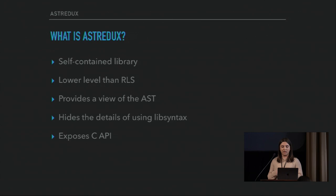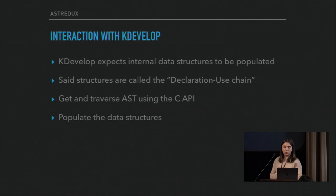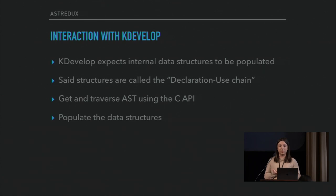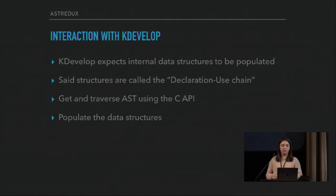At the moment it's using libsyntax as a platform to build on. In the future, I'm looking into getting more information from the Rust compiler and exposing that in a meaningful way as well. So how does this interact with kdevelop? kdevelop expects these internal data structures — called the declaration use chain — to be built. What happens is: from kdevelop, I pass to AST Redux the source code that it should parse and produce an AST for. It does its thing, and then kdevelop goes through the AST and populates its internal data structures.